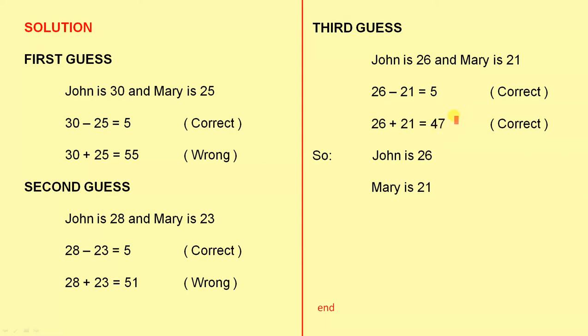When those two are satisfied, that is when they're both correct, we know we've solved the problem. John is 26 and Mary is 21.